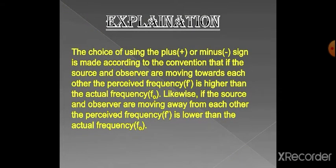The explanation of the previous equations: The choice of using the plus or minus sign is made according to the convention that if the source and observer are moving towards each other, the apparent frequency is higher than the actual frequency. Likewise, if the source and observer are moving away from each other, the apparent frequency is lower than the actual frequency F0.